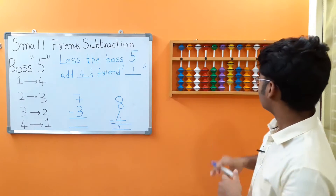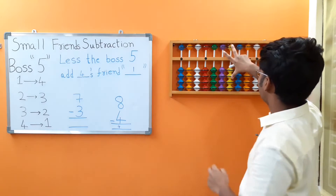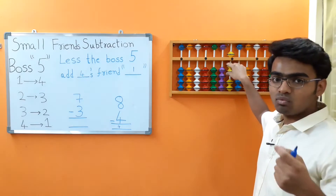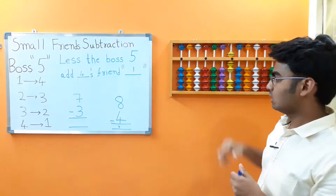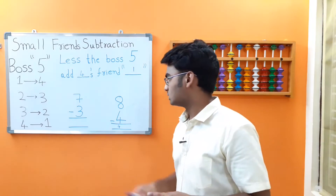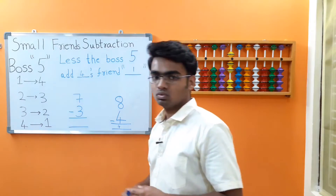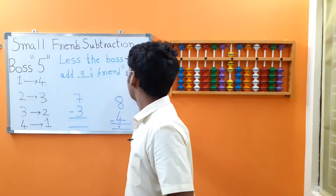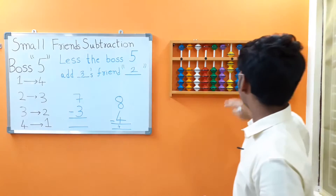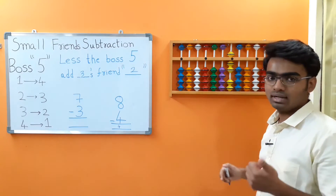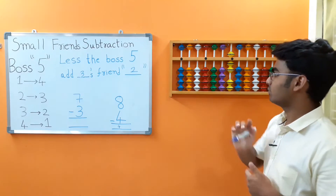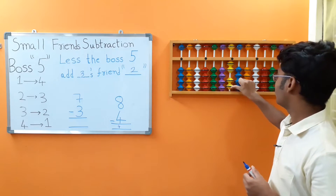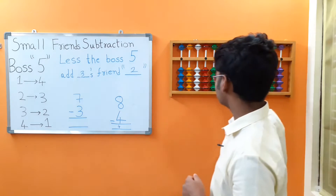Let's do another example: 7 minus 3. We are placing 7. We have to subtract 3, but we only have 2 beads at the lower end. 3's friend is 2. Following the statement — less the boss 5, add 3's friend 2 — we are adding 2. We got the answer as 4.